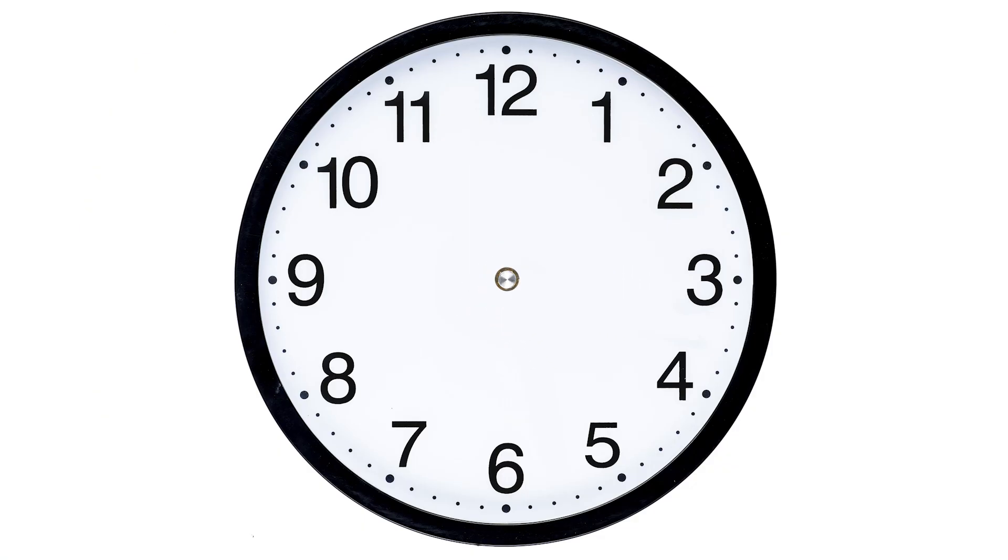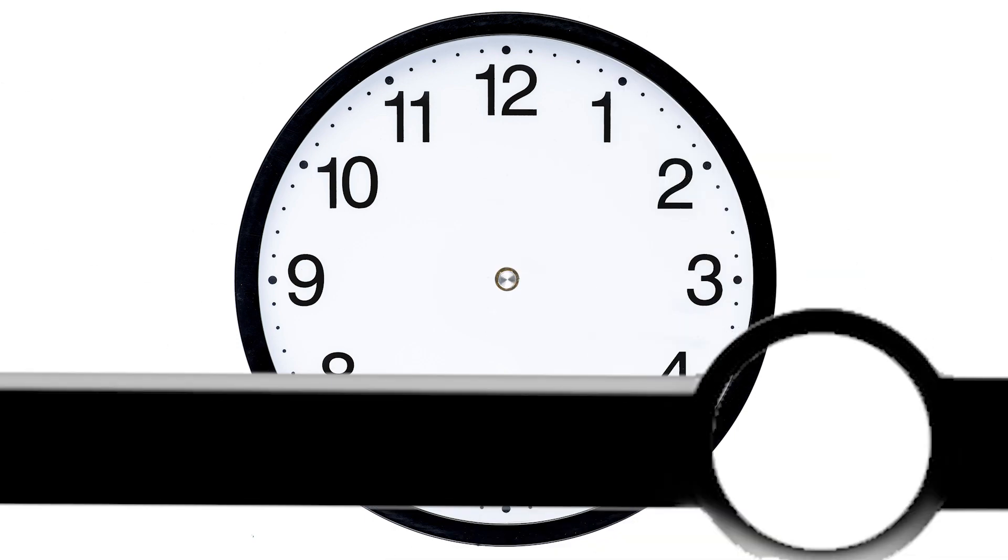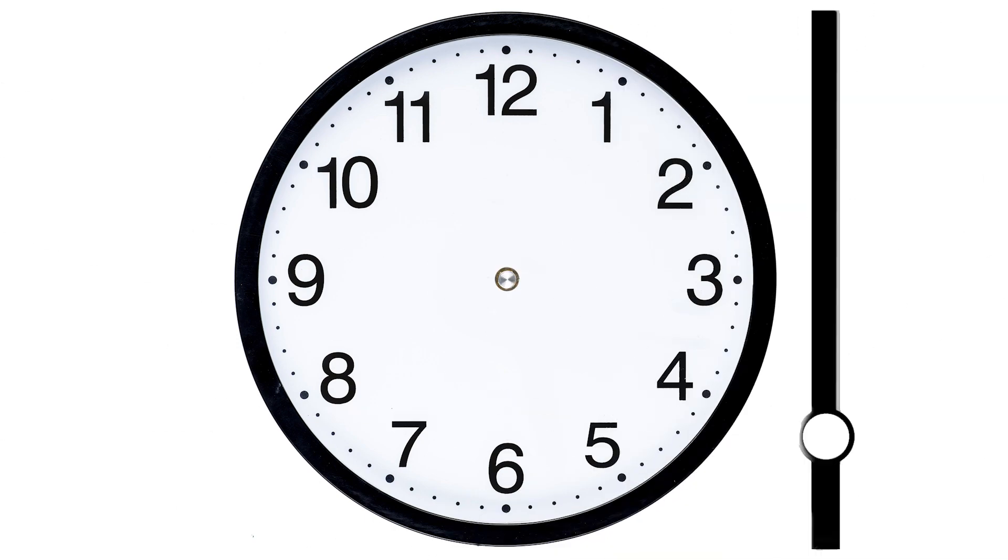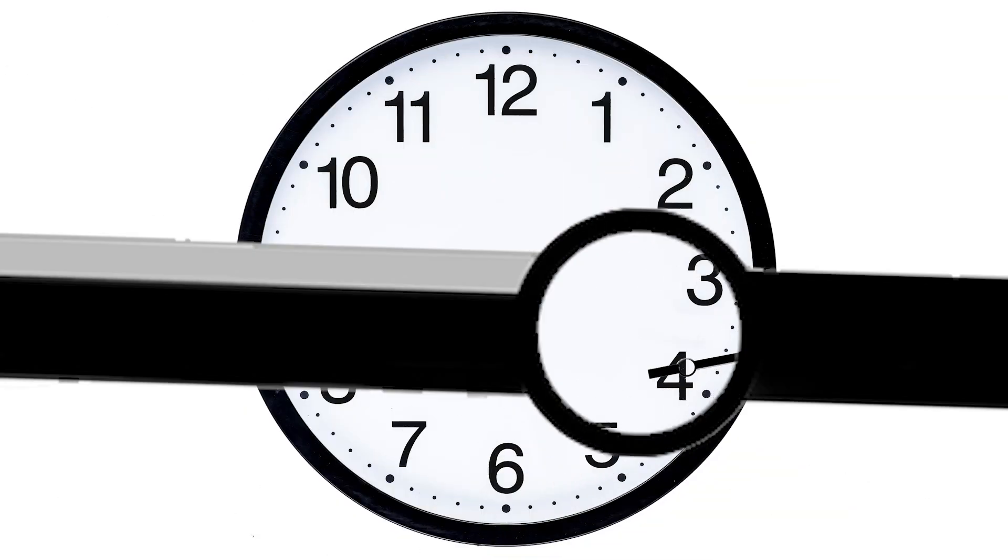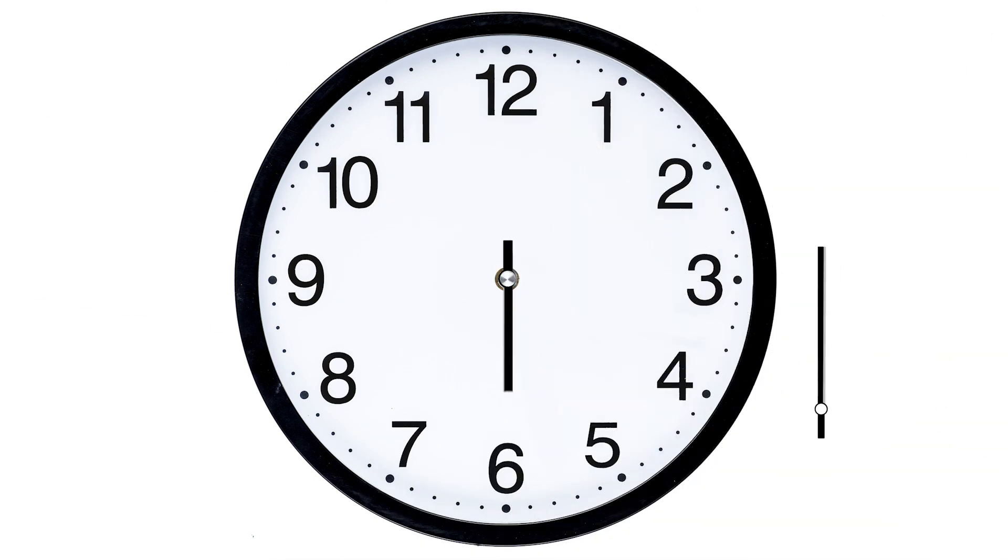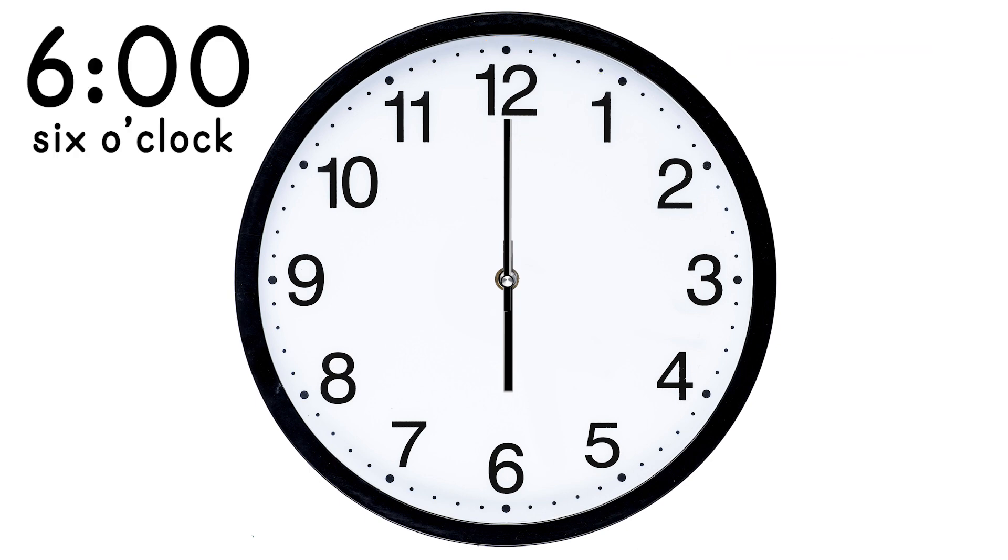So this is a clock, but this clock is missing something. It doesn't have any hands. So let's give it some hands. Here's an hour hand and it's short. Here's a minute hand and it's long. This is the first time we're going to look at. The hour hand points to the six and the minute hand points up to 12. So this is o'clock. So this is six o'clock.